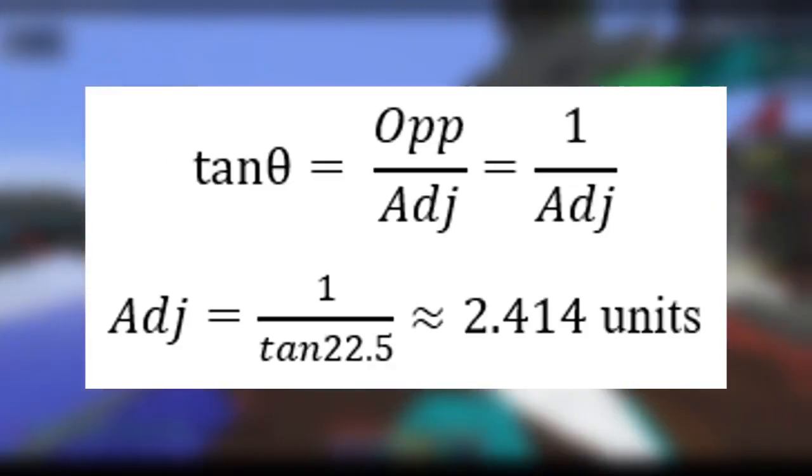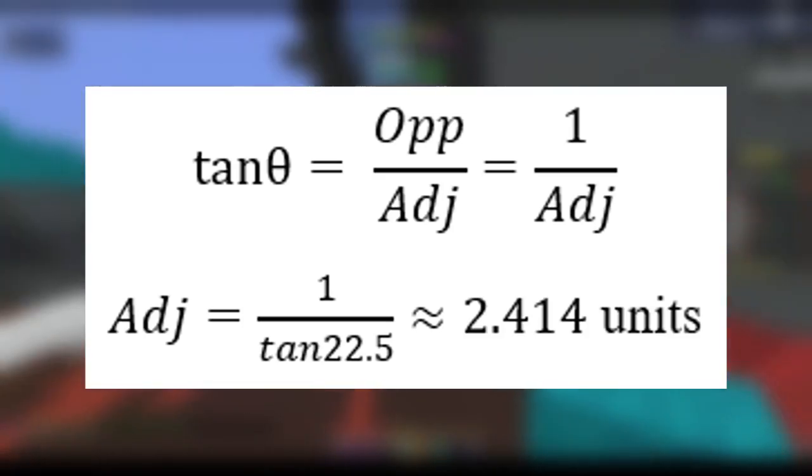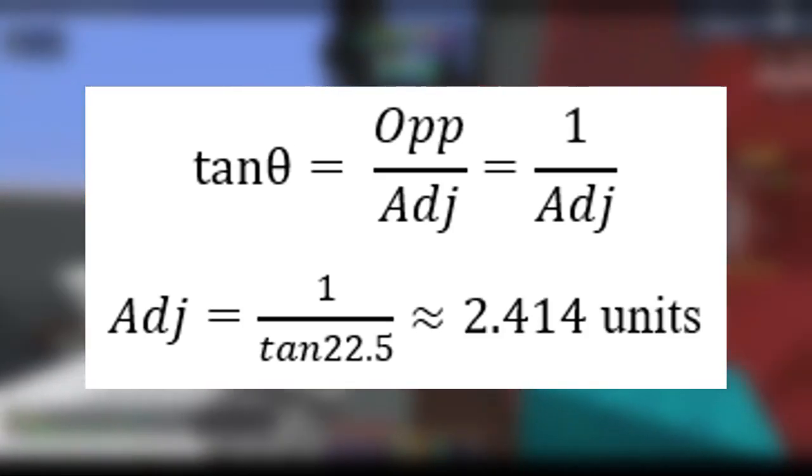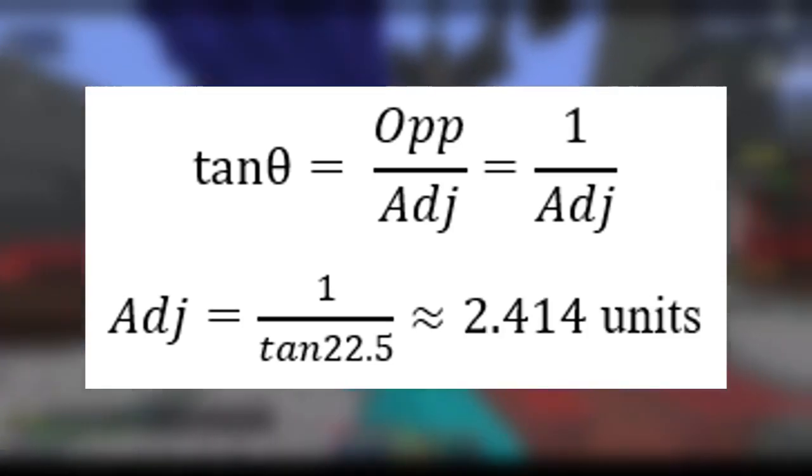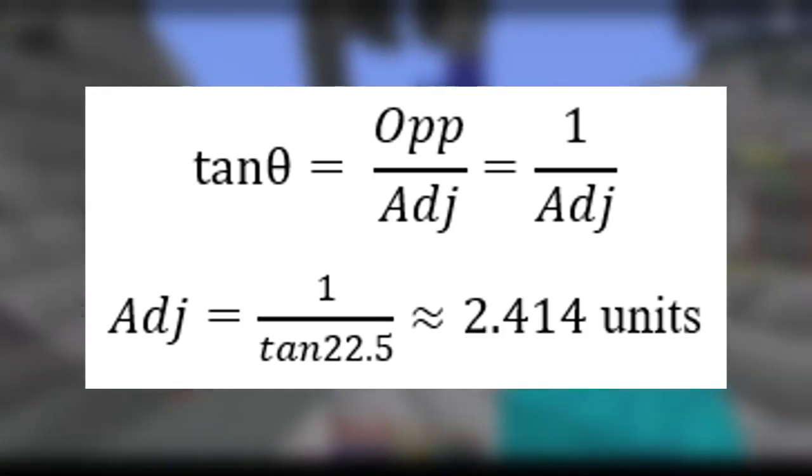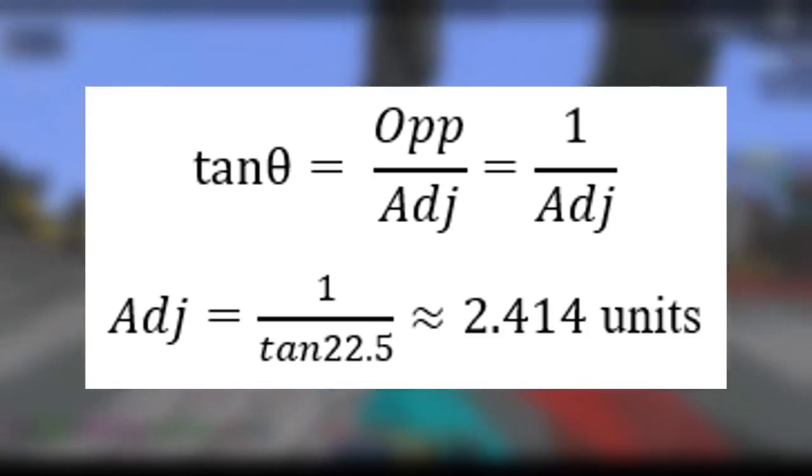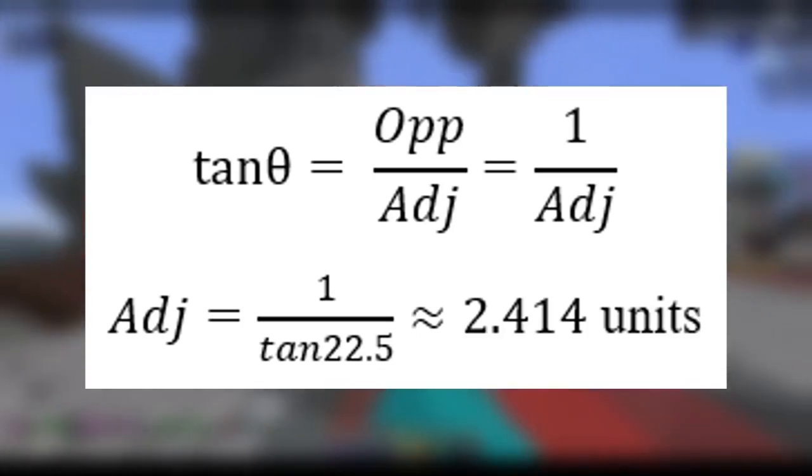We can first calculate for the adjacent side given the tangent function. So the tangent of theta or 22.5 degrees is equal to the opposite side over the adjacent side. We can then switch the positions of the adjacent side and the tangent, so your resulting equation becomes adjacent side equals 1 over tangent 22.5 degrees, which returns approximately 2.414 units.